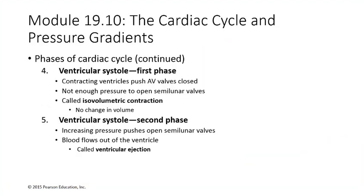Once the atria have squeezed, we go into ventricular systole. The AV valves close — they were open when the atria contracted, but when the ventricles begin to squeeze, the AV valves close. There is not yet enough pressure to open the semilunar valves, so there is a period called isovolumetric contraction, where the heart is contracting but the volume in the ventricle remains the same. Then, as squeezing continues, the pressure increases. Because pressure and volume are inversely related (Boyle's Law), as the ventricle squeezes smaller, pressure rises.